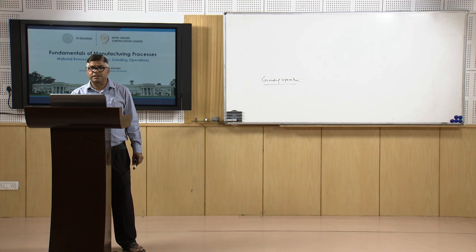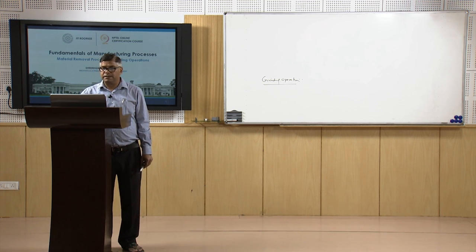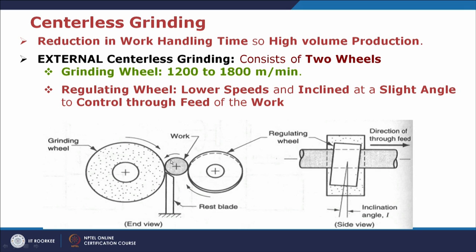Coming to the centerless grinding process — in centerless grinding there is no need to put the work piece on the chuck or on a center, it is simply placed on the rest blade. It uses one side the grinding wheel and another side the regulating wheel. The regulating wheel is given some inclination — this is the grinding wheel and this is the regulating wheel. This inclination is given to the regulating wheel: the regulating wheel is inclined vertically by an angle i. When this angle is given, the rotation of the regulating wheel when in contact with the work piece under pressure with the grinding wheel leads to longitudinal feed to the work piece. Because of this angular movement of the regulating wheel, the work piece is moved all along the width of the grinding wheel so that the entire length of the work piece can be processed.